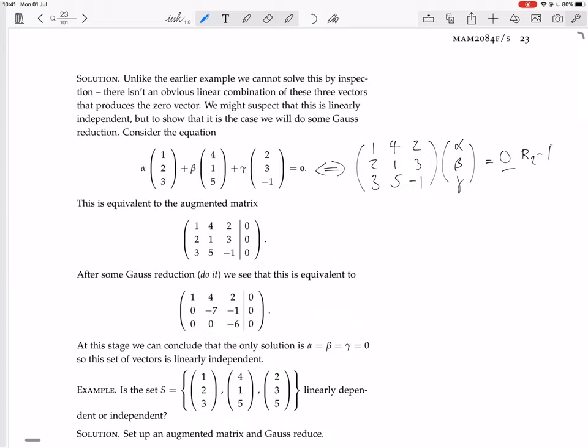Let me do it for myself. So let's do row 2 minus 2 times row 1, and let's do row 3 minus 3 times row 1. So we're going to get 1, 4, 2, then 0, minus 7, minus 1. Then we get 0, then 5 minus 12 is minus 7, and then we get minus 1 minus 6, that's also minus 7. And then we still have the alpha beta gamma, and the 0 is unaffected by any of these operations.